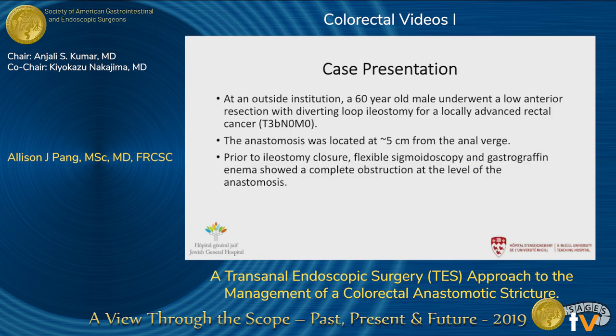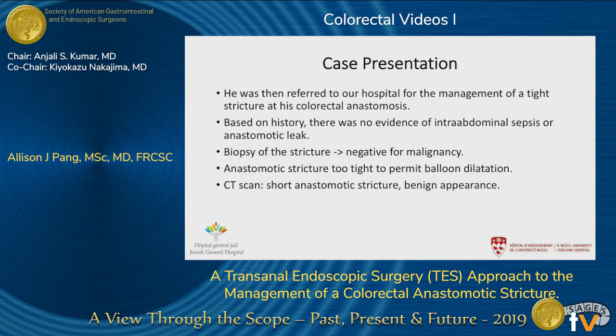This is a case of a 60-year-old gentleman who had a low anterior resection with a diverting loop ileostomy for a locally advanced T3N0 rectal cancer. This was done at an outside institution and the anastomosis was located at approximately 5 centimeters from the anal verge. Prior to ileostomy closure he underwent a flexible sigmoidoscopy as well as a gastrographin enema, both of which showed a complete obstruction at the level of the anastomosis. He was then referred to our hospital for the management of the stricture.